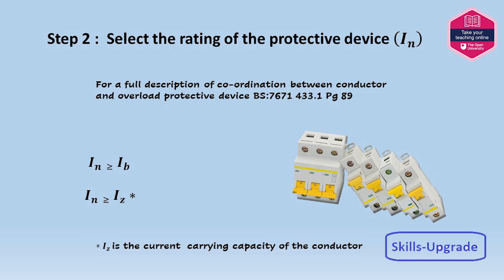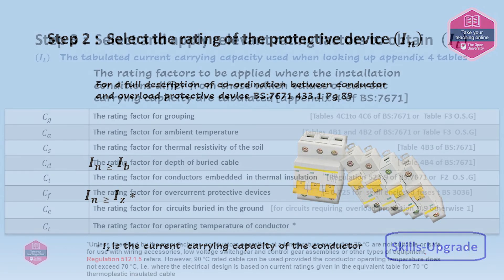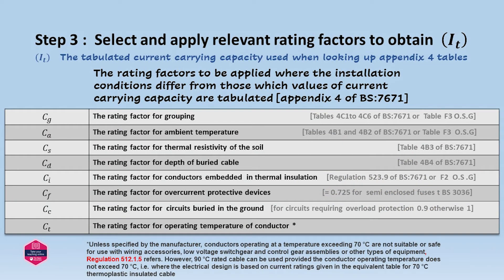Now that we have the design current, we can choose a protective device — in other words, a circuit breaker or a fuse. In must be equal to or greater than IB, your design current. In also has to be equal to or greater than Iz, which is the current carrying capacity of the cable. These conditions always have to be met. We then apply any relevant rating factors, shown here with references to regulations and tables.